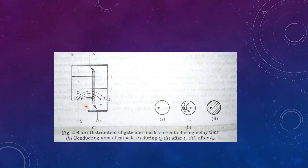This slide shows the gate current distribution and the anode current distribution across the gate cathode junction. During turn on, when a voltage is applied across gate and cathode, a gate current flows across the gate cathode junction. As shown in the figure, the gate current density is higher near the gate cathode junction and reduces as we move away from the junction. Therefore, anode current flows through the region where the gate current density is higher. The delay time can be decreased by increasing the gate current and by increasing the forward anode to cathode voltage.